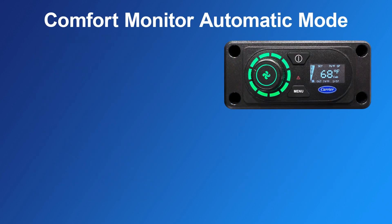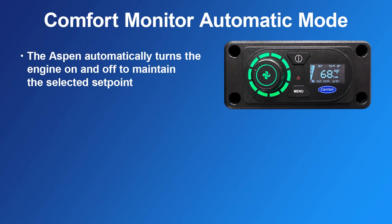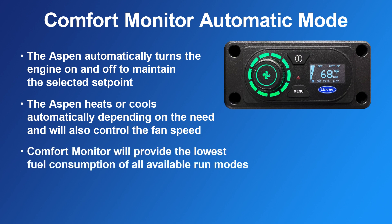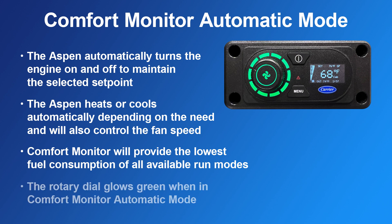During the comfort monitor run mode, the Aspen will automatically turn the engine on and off to maintain the desired set point. There is no need to select heating or cooling in comfort monitor, as the Aspen will automatically heat or cool depending on the need, and will also control the fan speed. Comfort monitor will provide the lowest fuel consumption of all available run modes. The rotary dial glows green when in comfort monitor automatic mode.